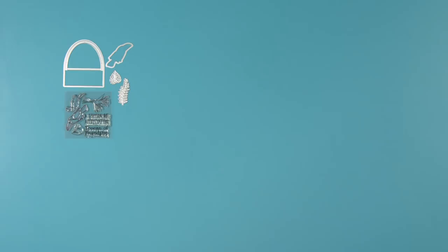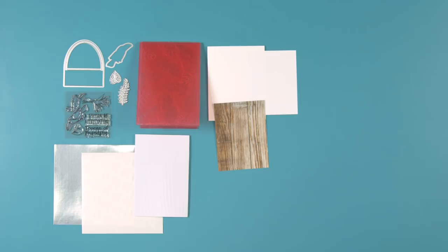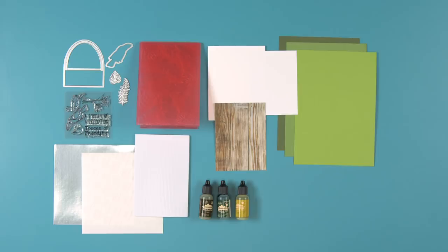Here's what you'll need: Toucan Sentiments Dies and Stamps, Tropical Leaves 3D Embossing Folder, Sizzix Foil Adhesive Sheets in Silver, Sizzix Adhesive Sheets, Sizzix Adhesive Foam, White Cardstock, One Sheet of Plain Copier Paper, Some Pattern Paper, and Three Shades of Green Cardstock.